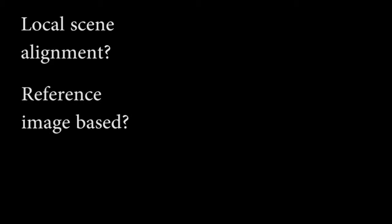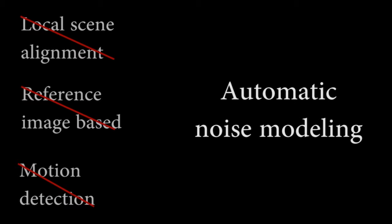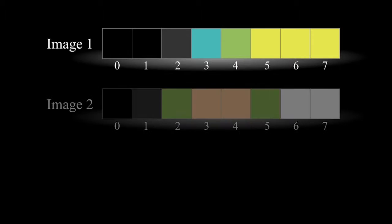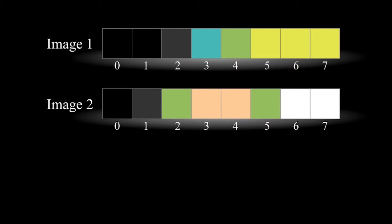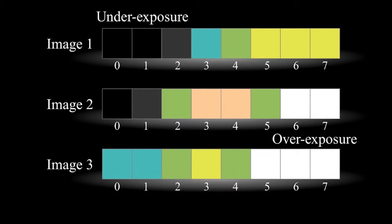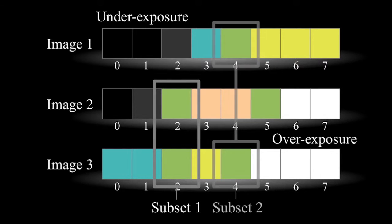We attempt to solve this problem with a novel approach that automatically models the noise distribution of colour values to determine their consistency. Colours are observed at the same pixel locations across different exposures. To test whether two colours correspond to the same irradiance, and so correspond to the same object, we need to know their noise distributions.